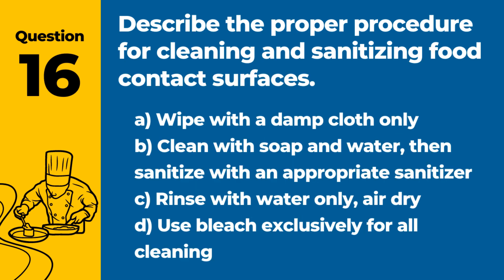Question 16. Describe the proper procedure for cleaning and sanitizing food contact surfaces. Answer: B. Clean with soap and water, then sanitize with an appropriate sanitizer. This two-step process ensures surfaces are free from food residue and pathogens.